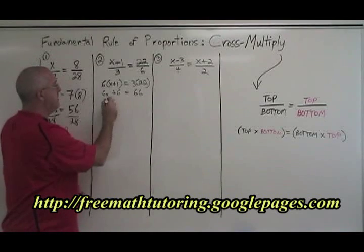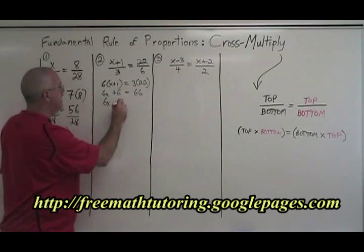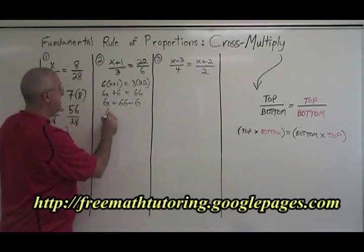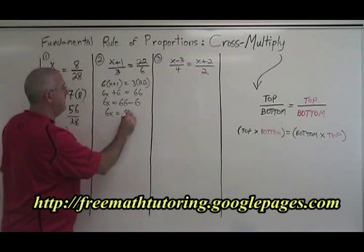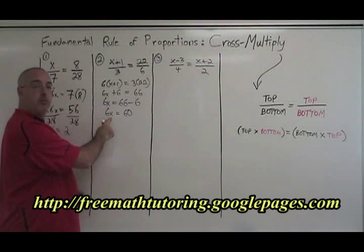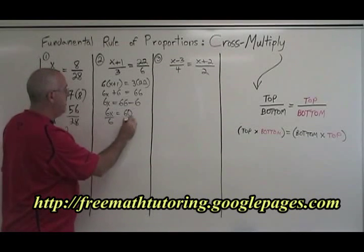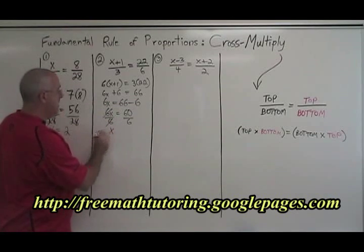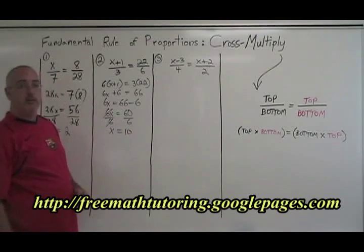We move the 6 to the other side. 6x equals 66 minus 6. Simplify. 6x equals 60. Our x is being multiplied by a 6, so we divide both sides by 6. These cancel, x is now isolated, and it's equal to 10. We have our answer.